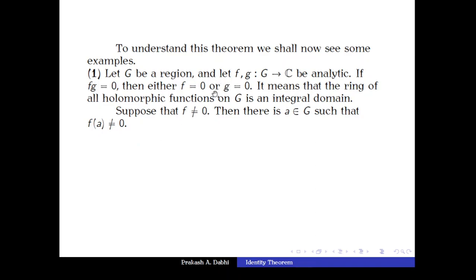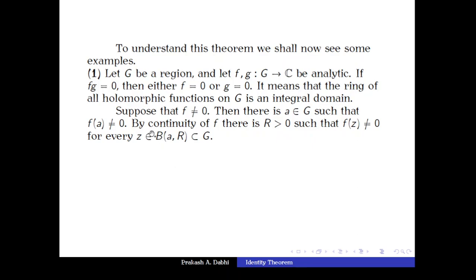Since f is not identically zero, it is non-zero at some point, so there exists some a in G such that f(a) ≠ 0. Since every analytic function is continuous, f is continuous at a. Because f is continuous at a and f(a) ≠ 0, the function is non-zero in a neighborhood of a. By continuity we get some r > 0 such that f(z) ≠ 0 for every z in the ball B(a, r).